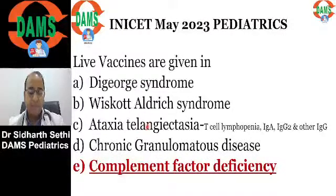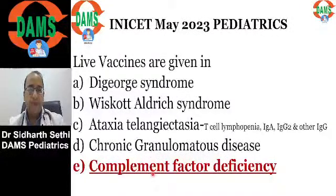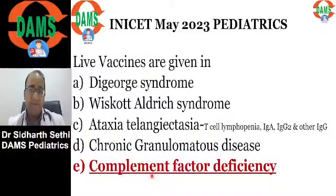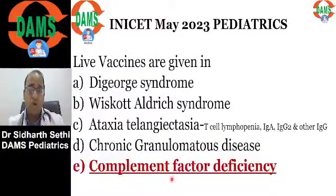Chronic granulomatous disease is a phagocytic defect. In this disorder, live bacterial vaccines are also contraindicated. However, in complement factor deficiencies, vaccines are actually indicated. These children are at risk of encapsulated organisms, so pneumococcal, H. influenzae, and Neisseria vaccines are especially indicated in complement deficiency syndromes.